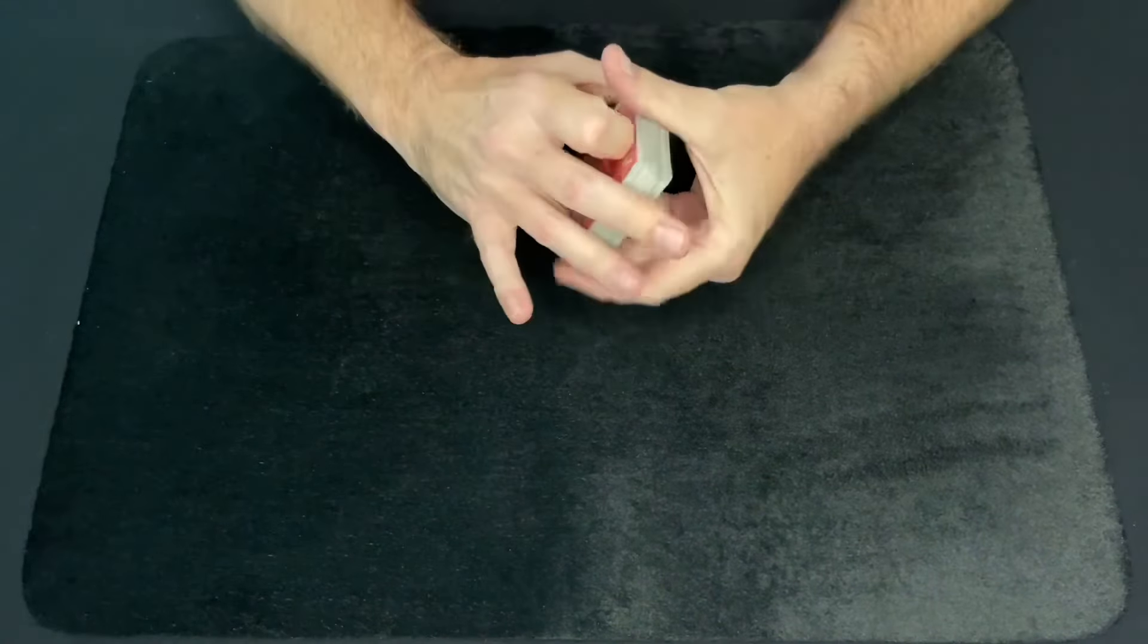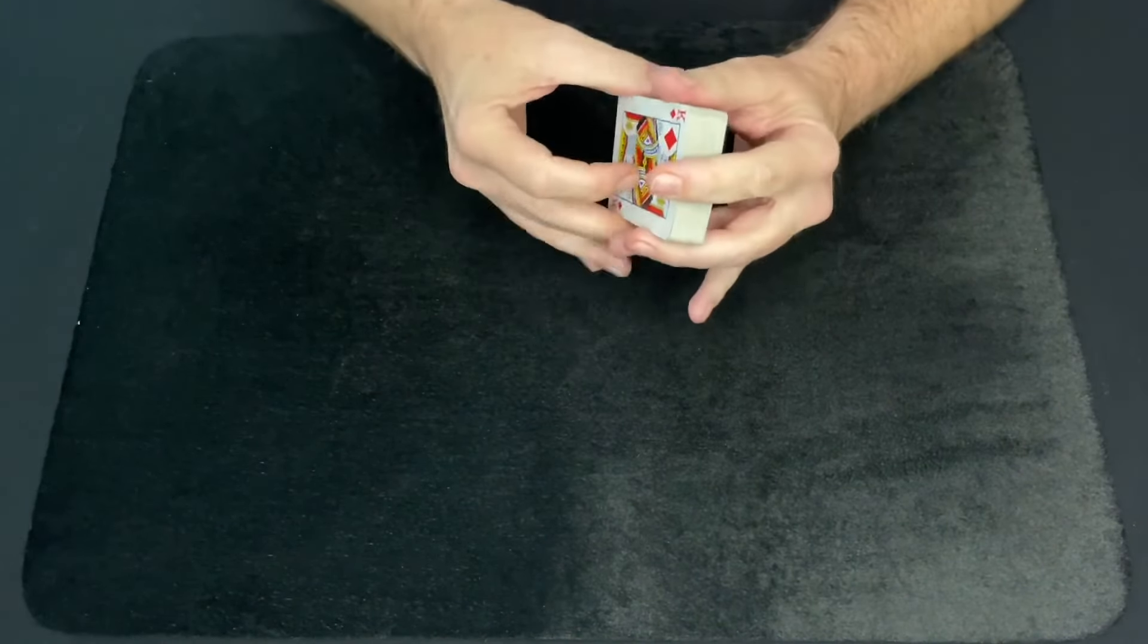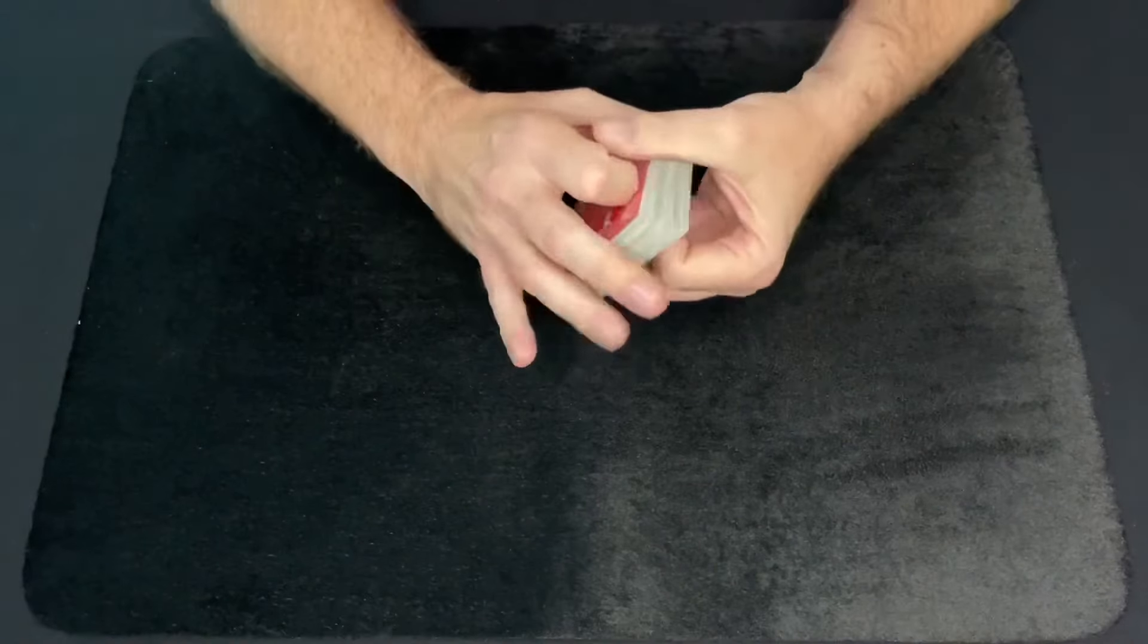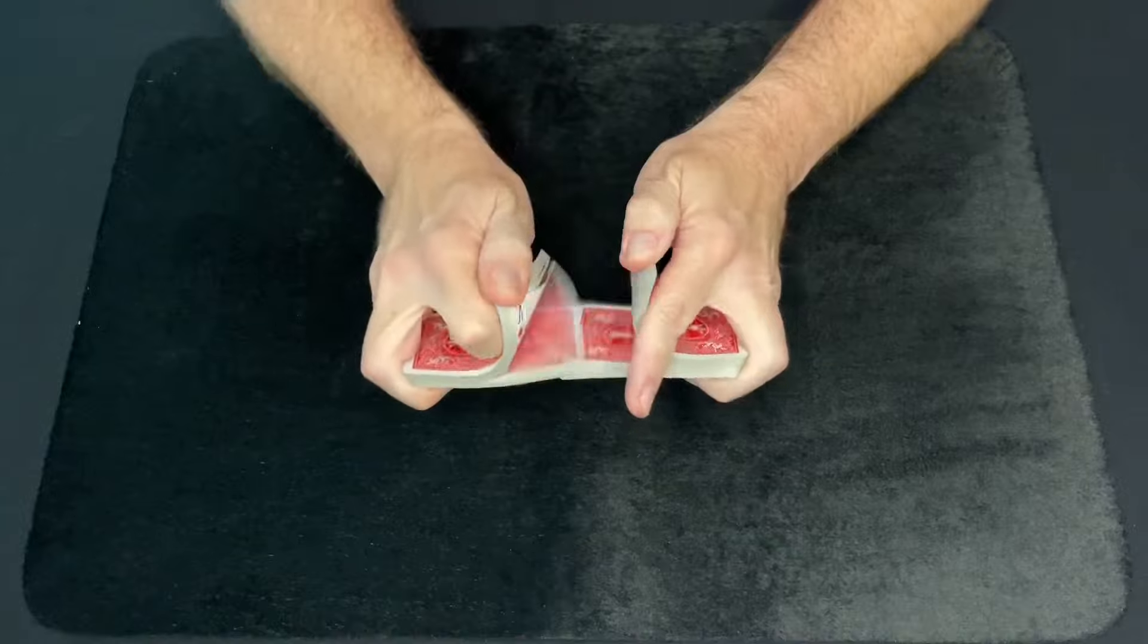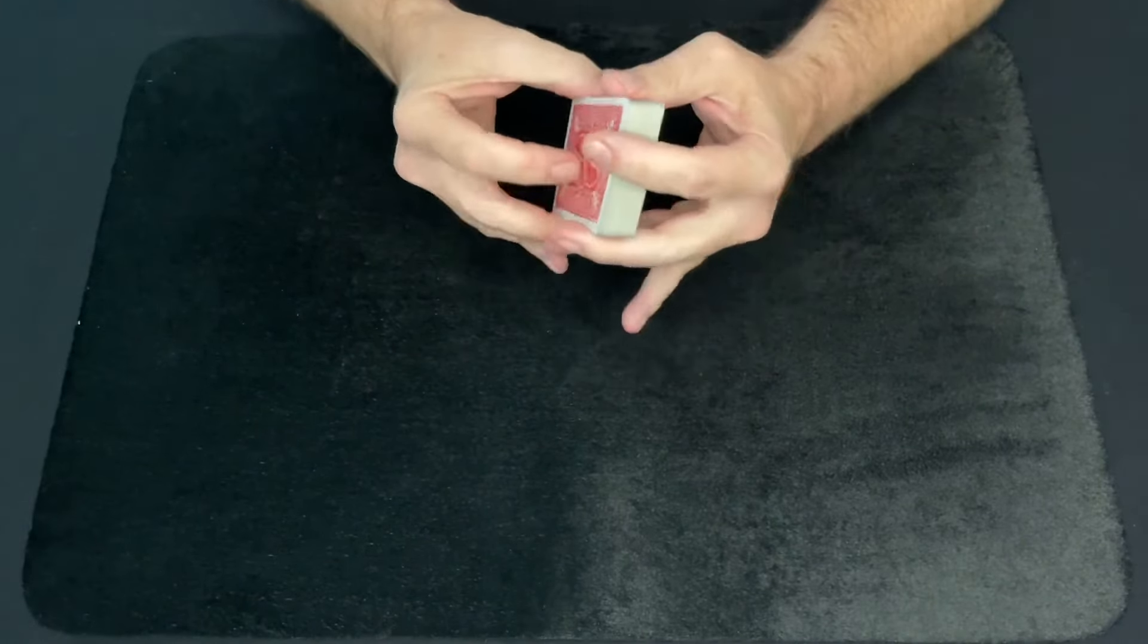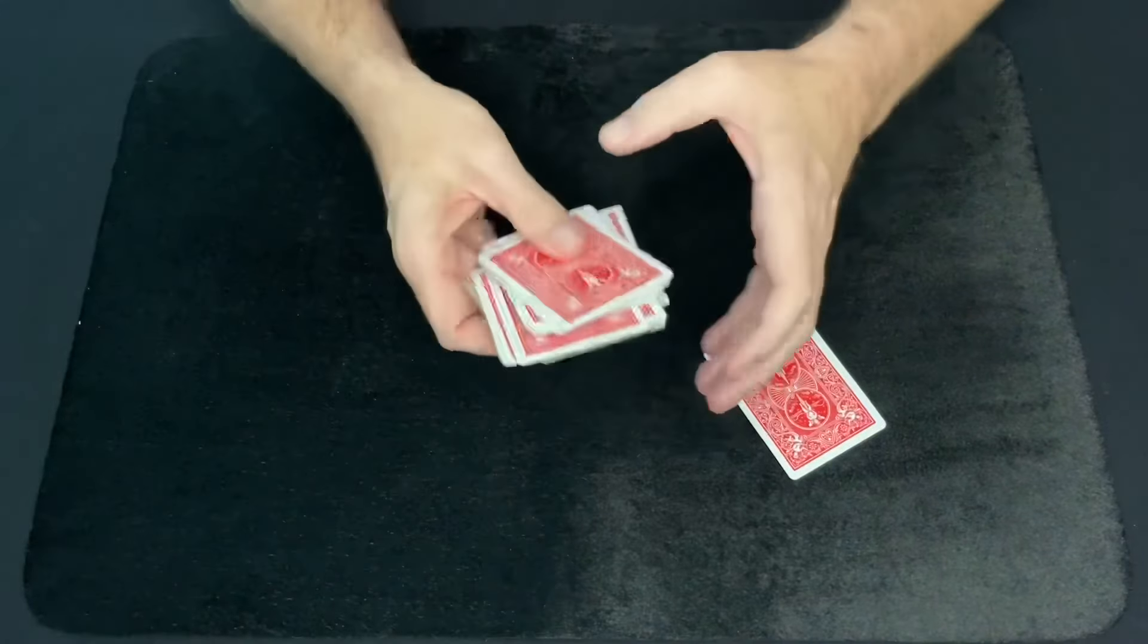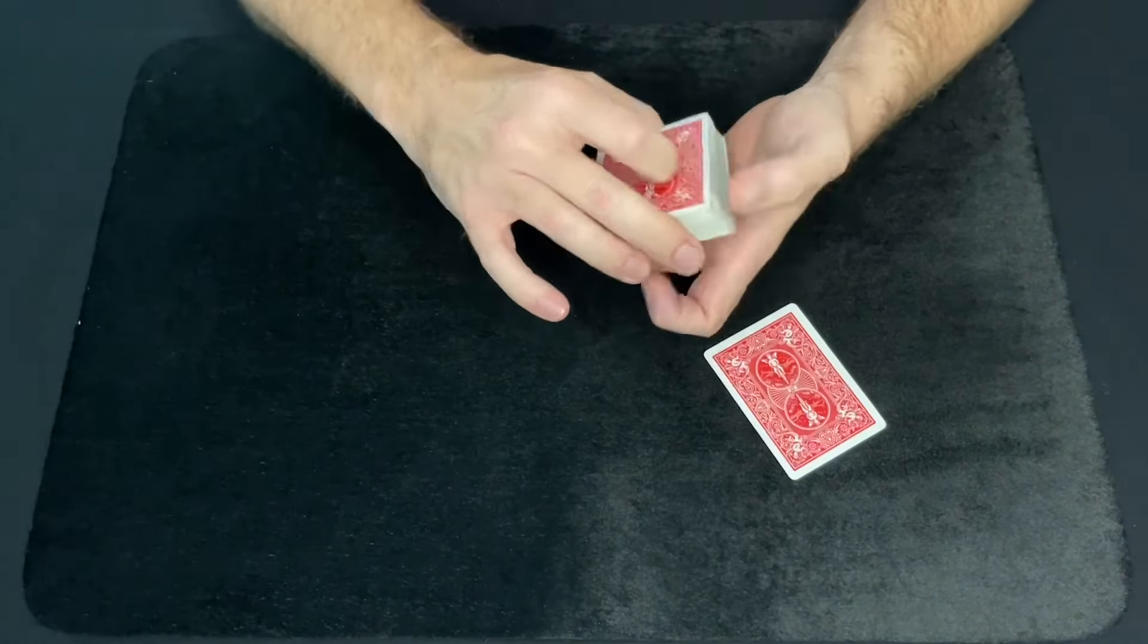Hello everyone. For today's magic tutorial, I thought it'd be neat to share with you a neat way on how to produce a selected card. So you have a regular deck of cards, well mixed, well shuffled, and you can have a spectator select any card that they like. Let's say they pick that card right there. Have the spectator look at it. They don't show you.